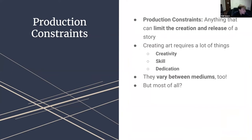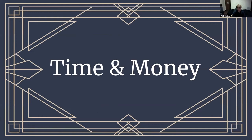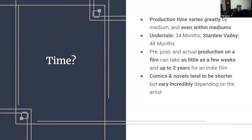Once we've determined our artistic skill sets, we must consider production constraints — anything that can limit the production of a work in our architecture. Creating art requires creativity, dedication, skill in a given medium, and an understanding of how people think. Production constraints can vary: what may be difficult to film in live-action may be a piece of cake in animation. But there are two vital constraints foundational to creating and releasing any art: time and money.